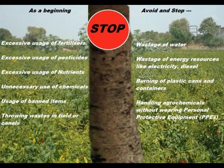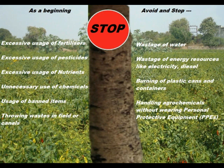As a beginning, avoid and stop: excessive usage of fertilizers, excessive usage of pesticides, excessive usage of nutrients, unnecessary use of chemicals, usage of banned items, throwing waste in the field or canals, wastage of water, wastage of energy, burning of plastic cans and containers, and handling agrochemicals without wearing personal protective equipment (PPEs). These are all things that are to be totally avoided.